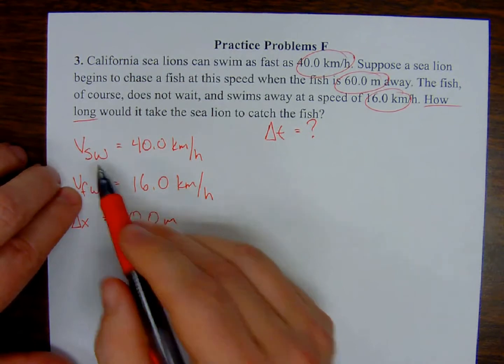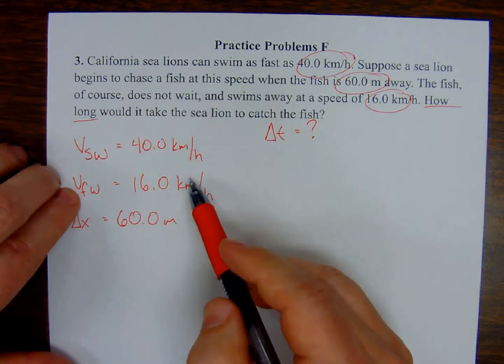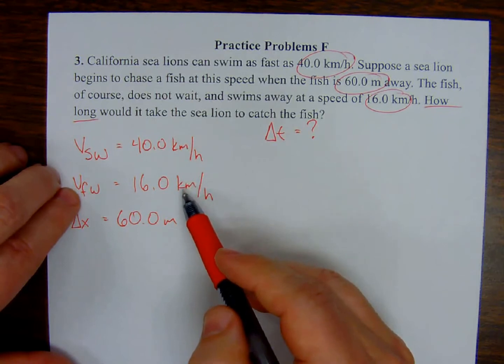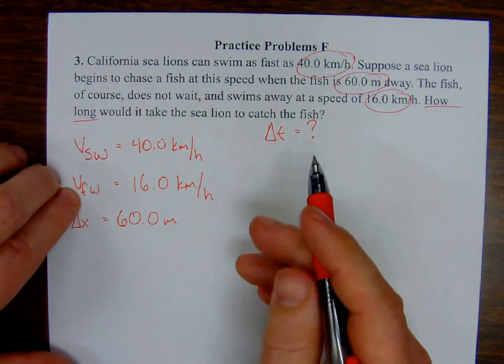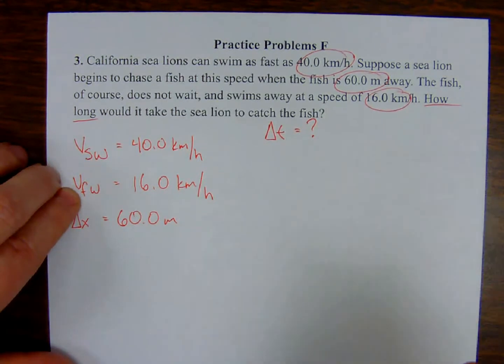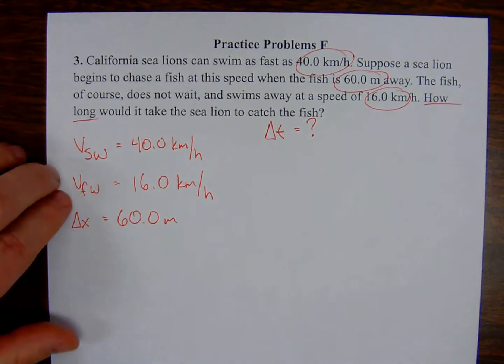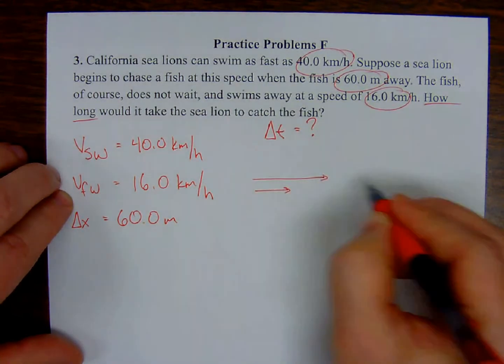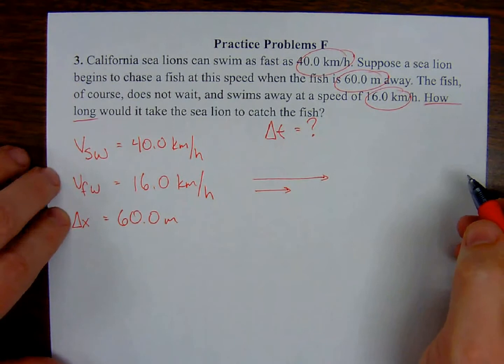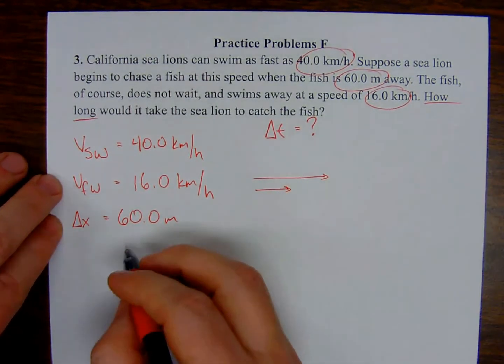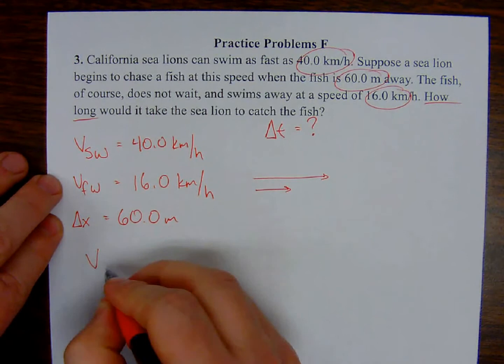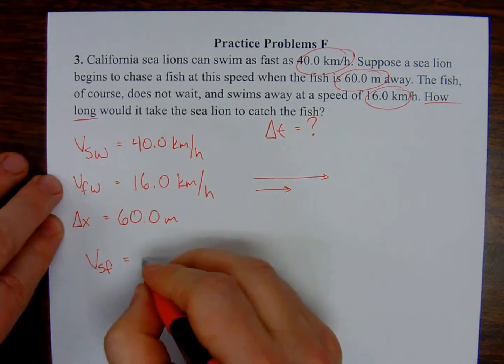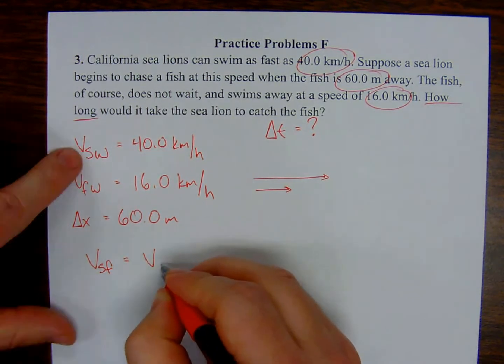By the way, they're both in the same direction. The fish is swimming away from the sea lion, so we can assume that they're both in the same direction. My velocity of the sea lion with respect to the fish is going to be equal to the velocity of the sea lion with respect to the water plus the velocity of the fish with regard to water.